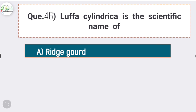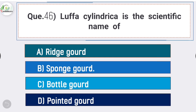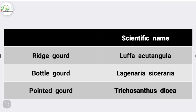Question number forty-six: Luffa cylindrica is the scientific name of - answer is option B - sponge gourd. Luffa acutangula is the scientific name of ridge gourd. Lagenaria siceraria is the scientific name of bottle gourd. And Trichosanthes dioica is the scientific name of pointed gourd.